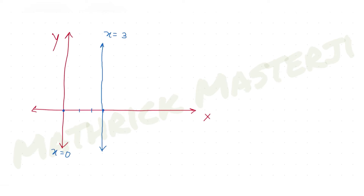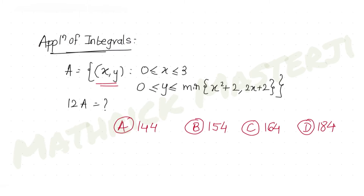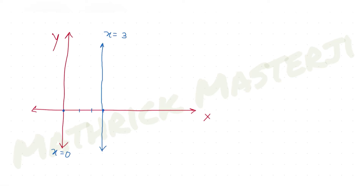For the y coordinates, y is greater than or equal to 0, meaning the region lies above the line y equals 0. The common region is bounded by these three lines, so it cannot be in the third, fourth, or second quadrant — the entire solution is in the first quadrant.